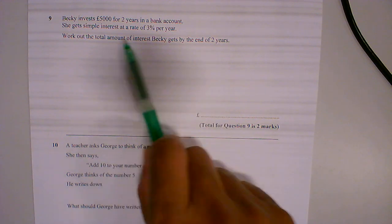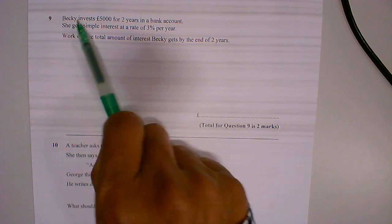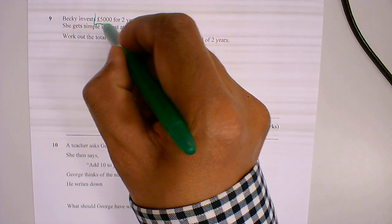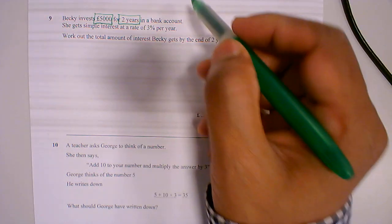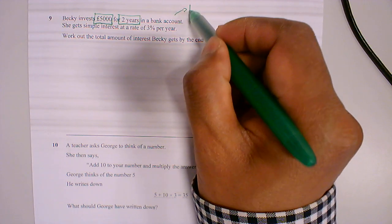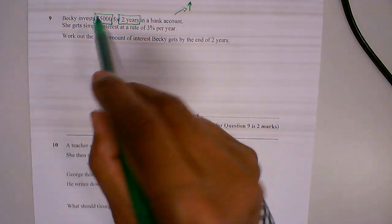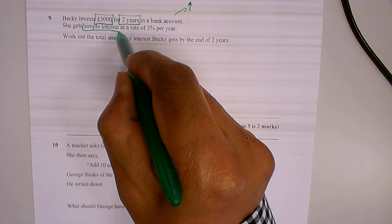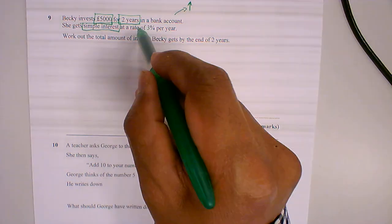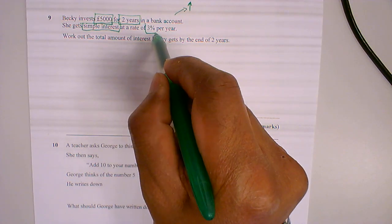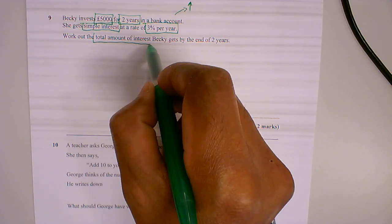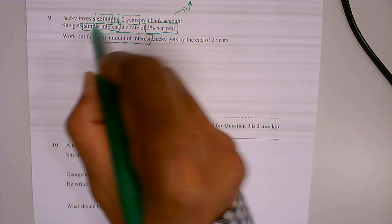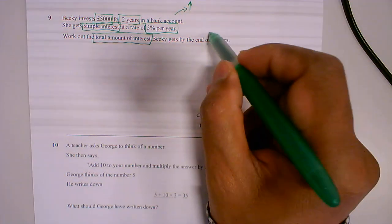So I've read the question, now I need to highlight key information. Becky invests £5,000 for two years in a bank account. So bank account, you should be thinking it goes up. She gets simple interest at a rate of 3% per year. Work out the total amount of interest Becky gets by the end of two years.